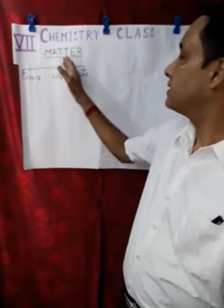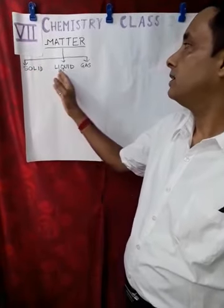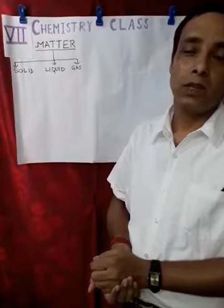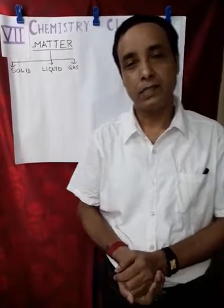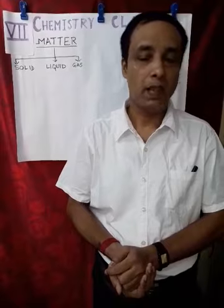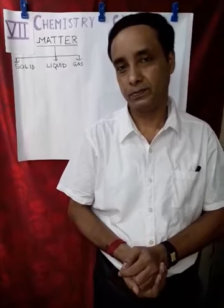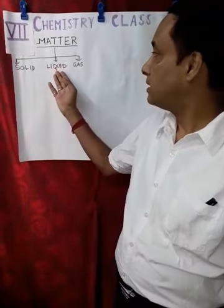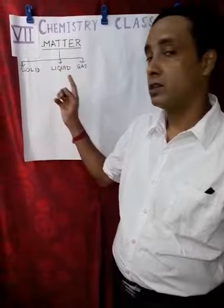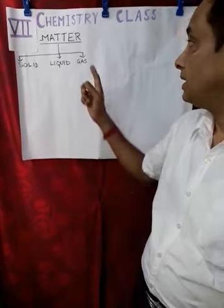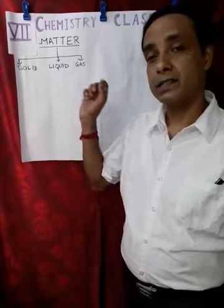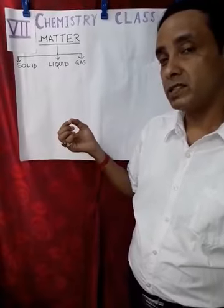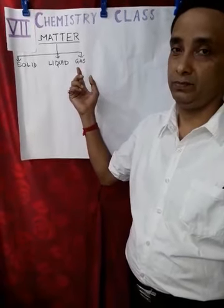Matter is further classified into solid, liquid, and gas. Solids are substances of matter which have definite shape and definite volume. Liquids are types of matter which have definite volume but no definite shape. Gases are types of matter which neither have definite shape nor definite volume.